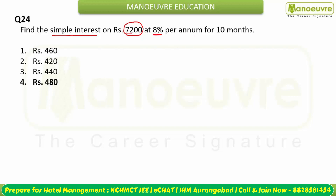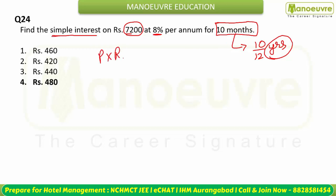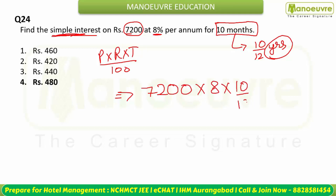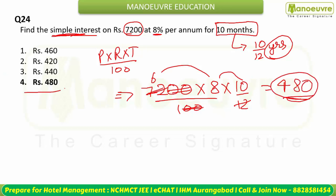Find the simple interest on ₹7200 at 8% per annum for 10 months. Convert 10 months to years: 10/12. Using SI = P × R × T / 100: 7200 × 8 × (10/12) / 100. Cancelling: 72 × 8 × 10 / 12 = 6 × 8 × 10 = 480. Simple interest = ₹480. Option four is correct.